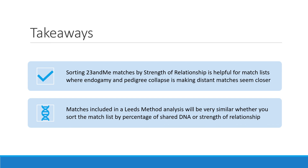Our takeaways: sorting 23andMe matches by strength of relationship is very helpful for a match list where endogamy and pedigree collapse is making distant matches seem closer. But for everyone else, the matches included in a leads method analysis will be very similar whether you sort by percentage of shared DNA or strength of relationship. You can include as many matches as you feel like working on, but you don't need to go all the way to the bottom of your match list. About 1.2% of shared DNA, or third cousins, is a good place to stop.